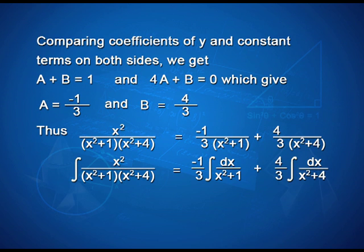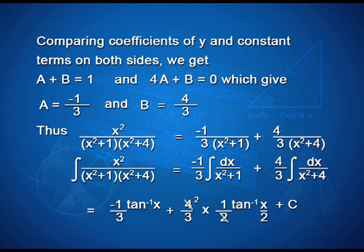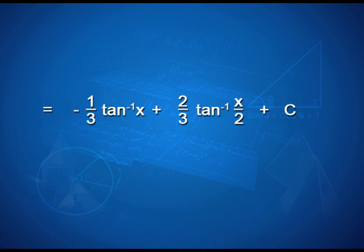That equals -1/3 · tan⁻¹x + 4/3 · (1/2) tan⁻¹(x/2) + C, which simplifies to -1/3 · tan⁻¹x + 2/3 · tan⁻¹(x/2) + C.